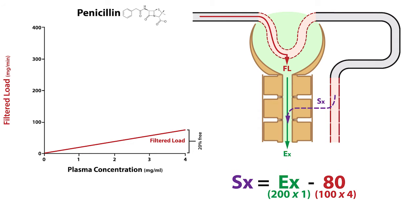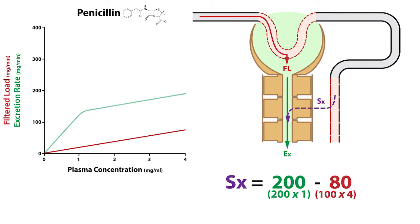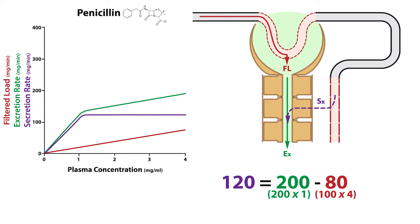The excretion rate equals the urine concentration of 200 milligrams per milliliter times the urine flow rate of 1 milliliter per minute, which yields an excretion rate of 200 milligrams per minute. From these values, we see that the secretion rate of penicillin equals 120 milligrams per minute.